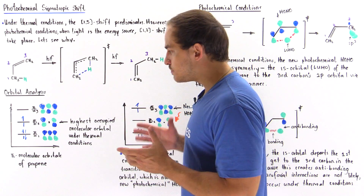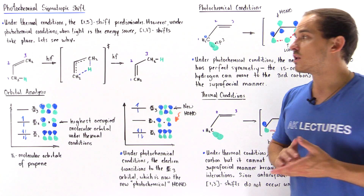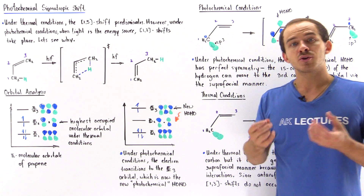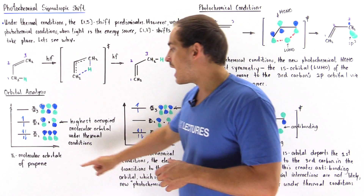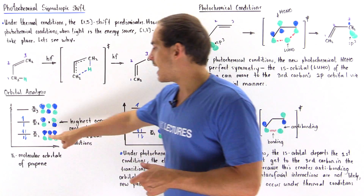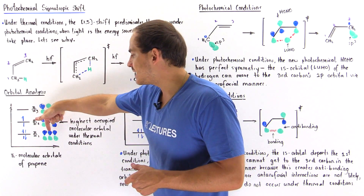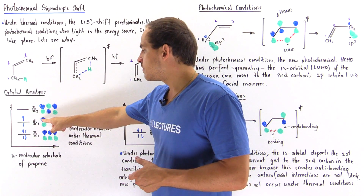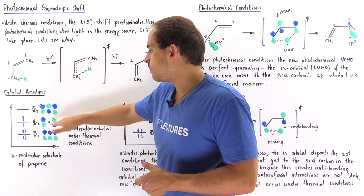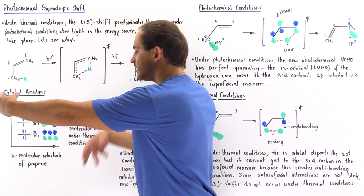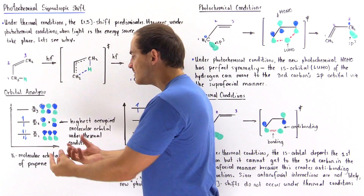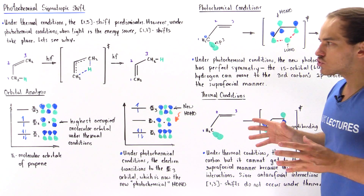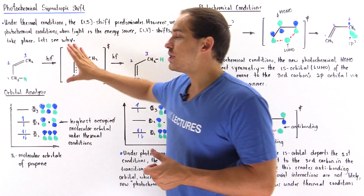To answer this question, let's begin by looking at the pi molecular orbitals of the propene molecule. Propene contains three carbon atoms, so we combine three 2p orbitals to form three pi molecular orbitals. We have phi 1 in which all the negative lobes are on top and all the positive lobes are on the bottom; phi 2 where we have a blue lobe, a green lobe, a green lobe, and a blue lobe, with bonding and anti-bonding canceling out in the middle; and phi 3 looks like this.